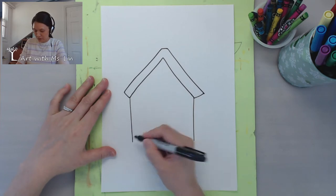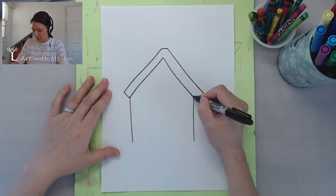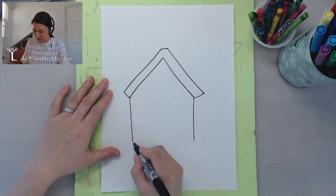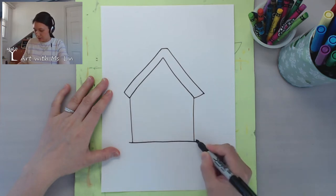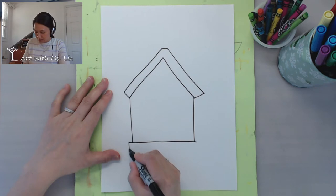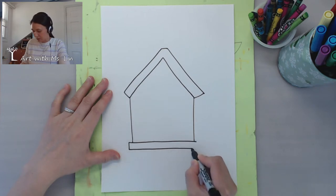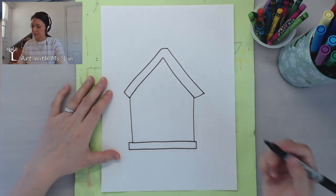So from the corner of the rooftop, you draw the lines down and then at the bottom we're going to draw the base which is a very long rectangle like that.